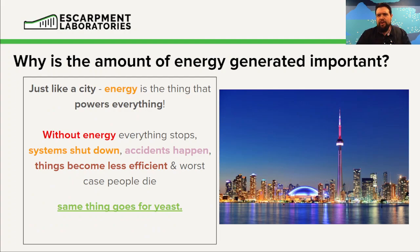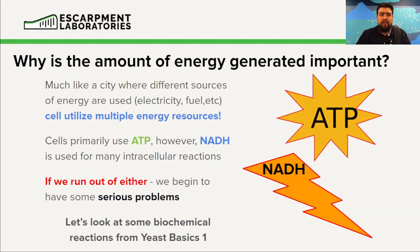Why is the amount of energy generated important? Just like a city, energy is a thing that powers everything. Without energy, everything stops — systems shut down, Wi-Fi goes out, accidents happen, things become less efficient, and in the worst case people die. The same thing here goes for yeast. Much like a city that uses different fuel sources, cells utilize multiple energy sources. Cells primarily use ATP; however, NADH is used for many intracellular reactions. You're going to see both throughout many of the biochemistry pathways we'll be looking at. If we run out of either, we begin to have some serious problems.